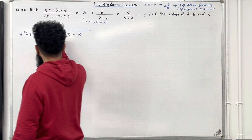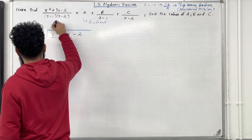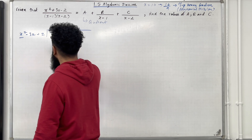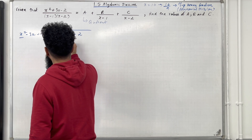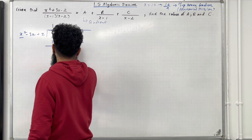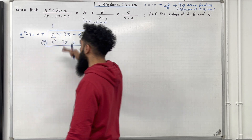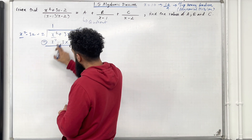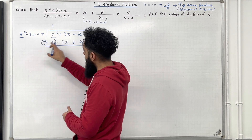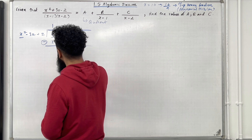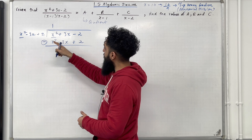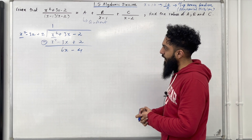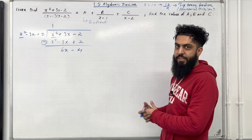I've got x squared divided by x squared which is 1. I take the 1 and multiply with this quadratic, giving me x squared minus 3x plus 2. Now I must subtract the two polynomials. So I get 0 for the x squared term, and 3x minus minus 3x which is 6x, and minus 2 minus plus 2 which is minus 4.